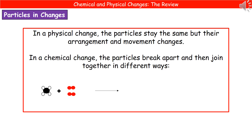If we now consider what happens to the actual particles during physical and chemical changes we'll see a clear difference. In a physical change, we start off with water molecules in ice — in a solid they're all packed closely together, vibrating around a fixed point, but they're water molecules. If we then melt that ice into liquid water, we still have water molecules but they're able to flow.